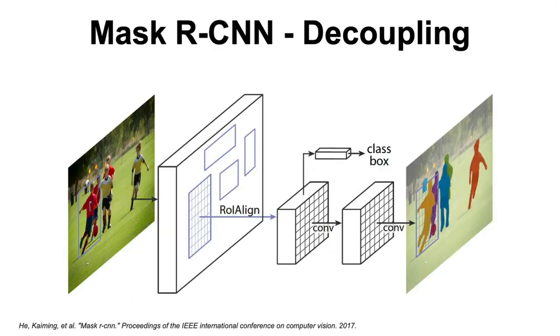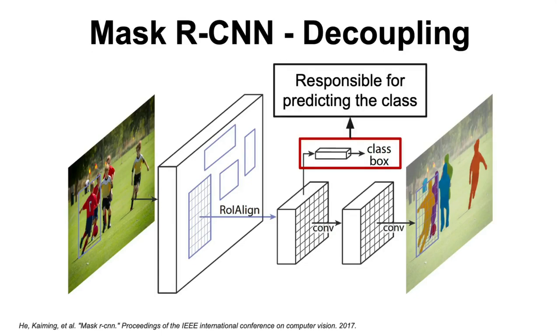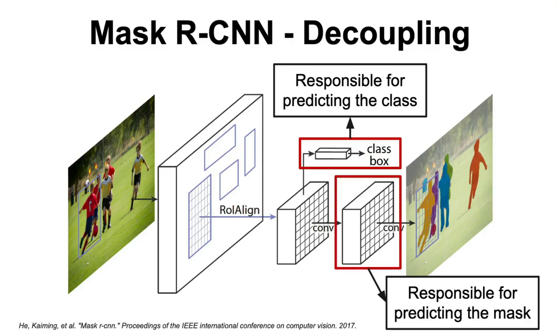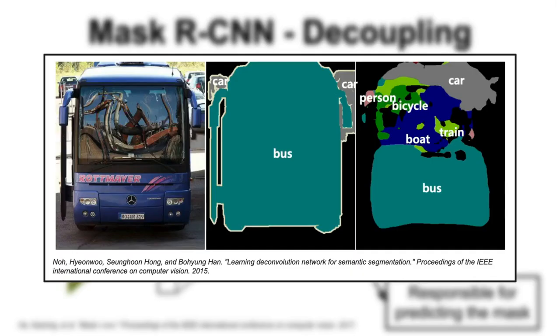The interesting fact about this architecture is that the class of the object is decoupled from the mask. The class of the object is predicted by the class classifier branch in the Faster R-CNN architecture, while the mask of the object is predicted by the mask branch. This is quite different compared to previous semantic segmentation architectures, where they employed the softmax activation function and subsequently the masks across classes competed with each other, creating inconsistent labels.